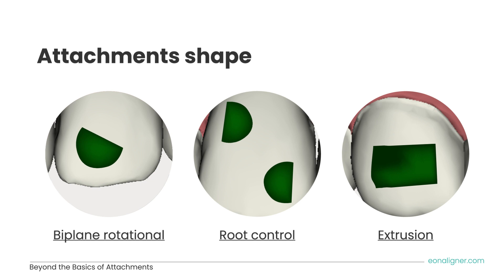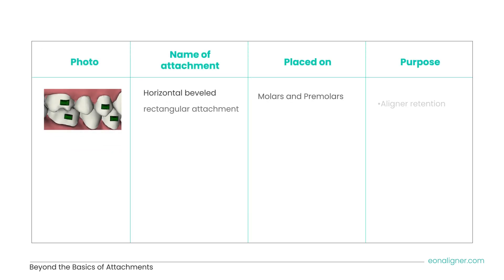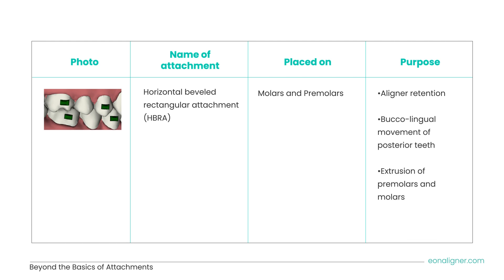We will now discuss each attachment with more in-depth detail, including when and where they are placed and the purpose they achieve. The horizontal beveled rectangular attachment is usually placed on molars and premolars and serves multiple functions: aligner retention, buccolingual movement of posterior teeth, and extrusion of premolars and molars. Previously, pure rectangular attachments with no bevels were used, meaning the aligner had to be fully seated over perpendicular edges — otherwise, teeth might not track well or could move in an unintended direction.